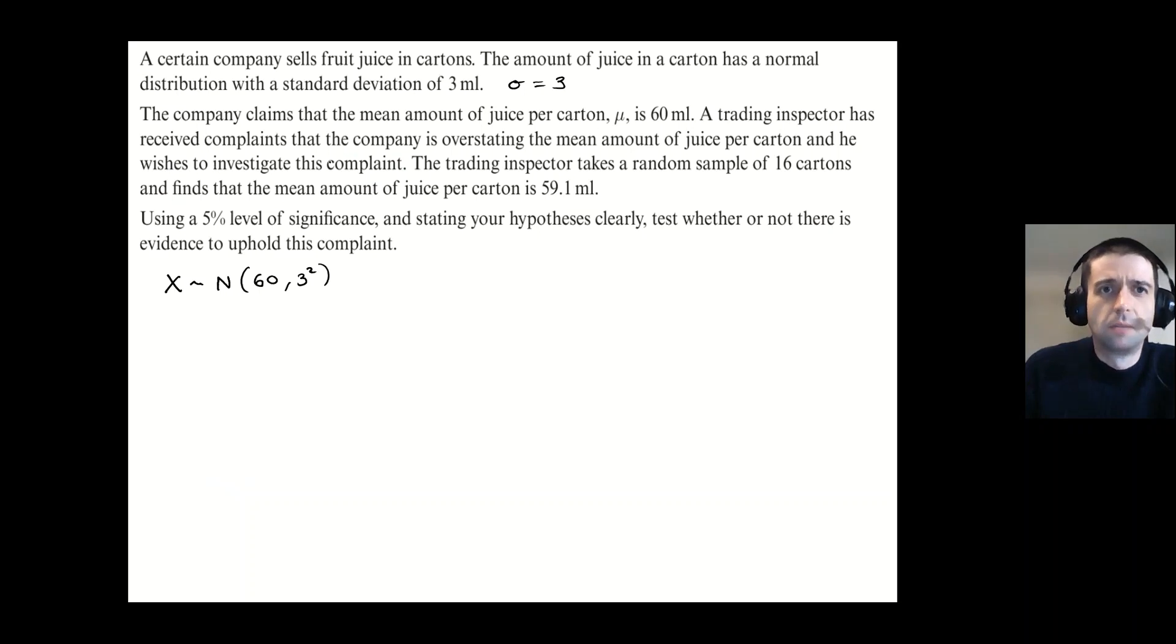Now, a trading inspector has received complaints that the company is overstating the mean amount of juice per carton and he wishes to investigate this complaint. The trading inspector takes a random sample of 16 cartons and finds that the mean amount of juice per carton is 59.1. So the information that I'm getting from this is that they've taken a sample size of 16. So n is equal to 16. I'm going to go right ahead now and say that the distribution that I'm going to be using for my hypothesis test is X̄ follows the normal with a mean of 60 and a variance of three squared over 16. And I'm just going to write here that my variance of my samples is nine over 16, which means that the standard deviation for my sample distribution is going to be three over four.